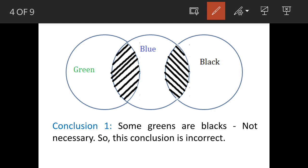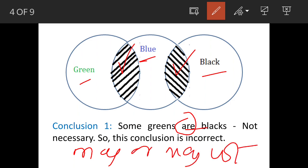Now, conclusion 1. Some greens are blacks. So, greens are present here and blues are present here, but only some greens are blacks. So, this may or may not be correct because if you link it further, only some blues are blacks. So, this sum may have element of green or may not be. So, this statement is actually in definite term because of this word are.